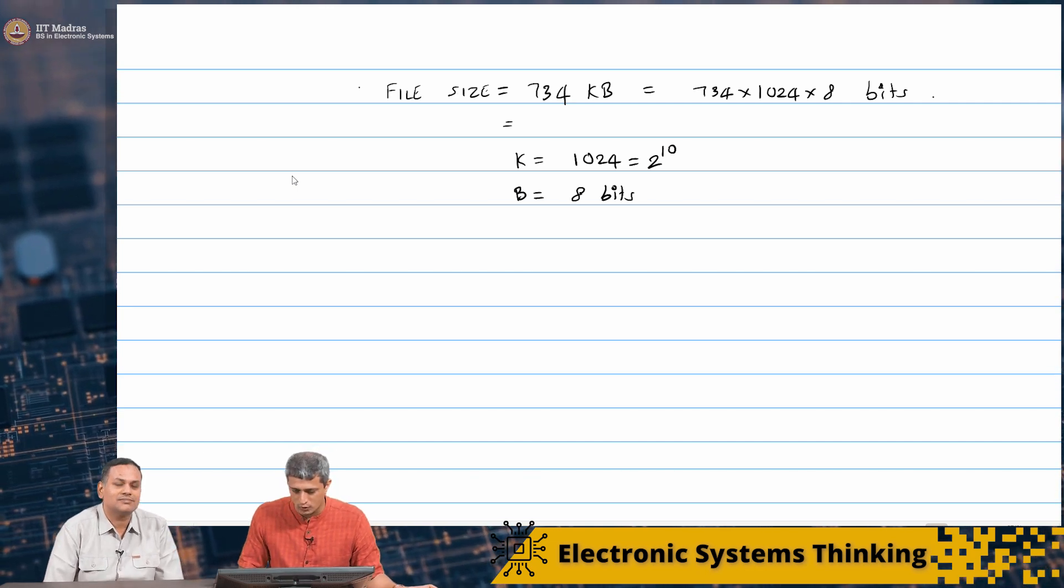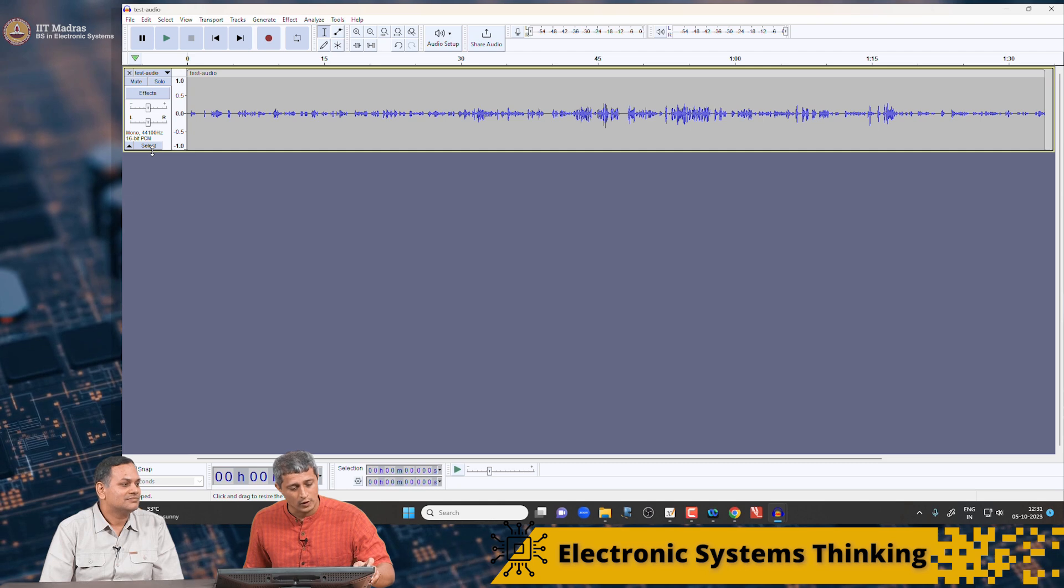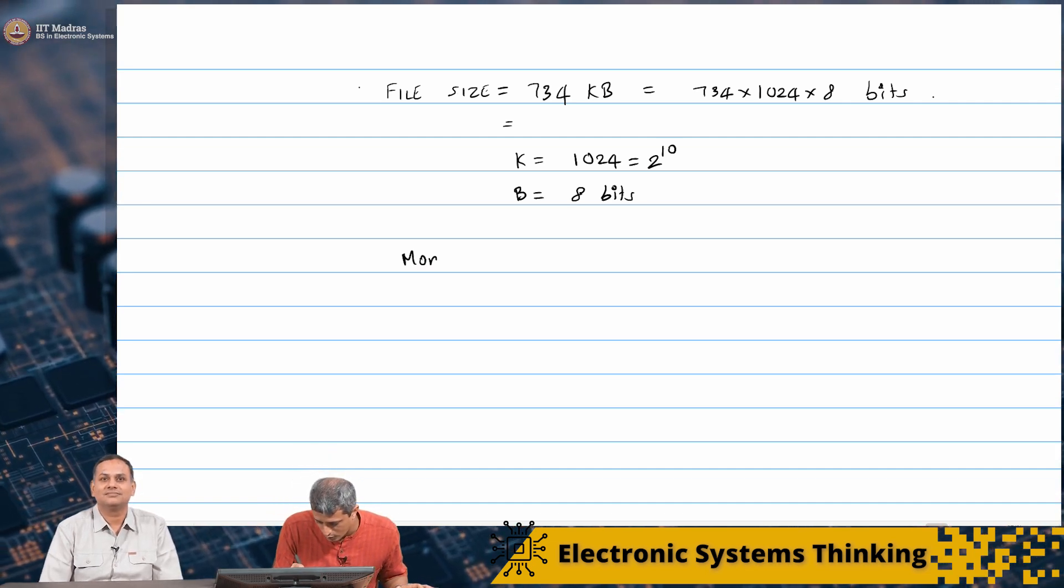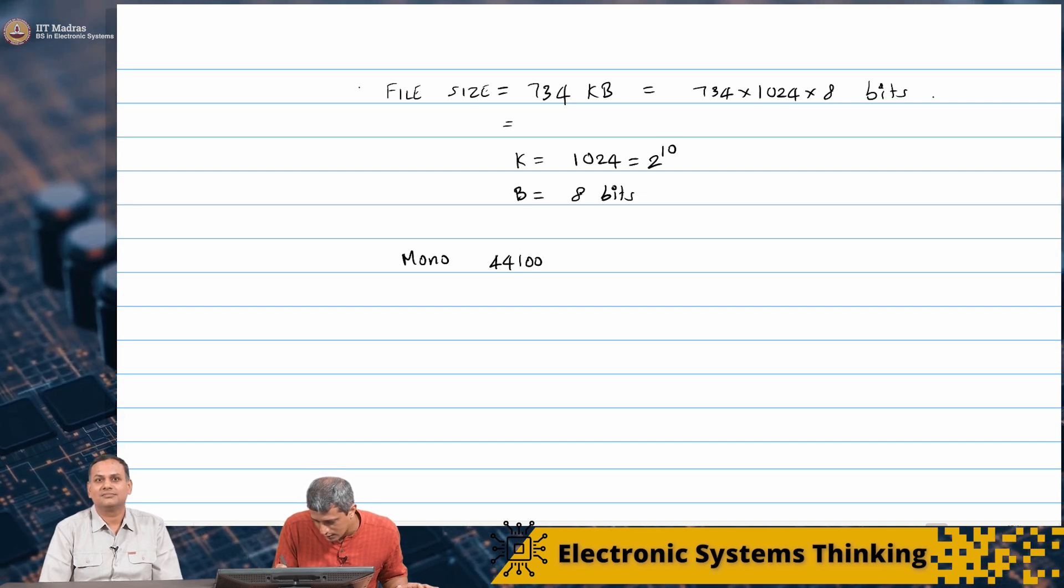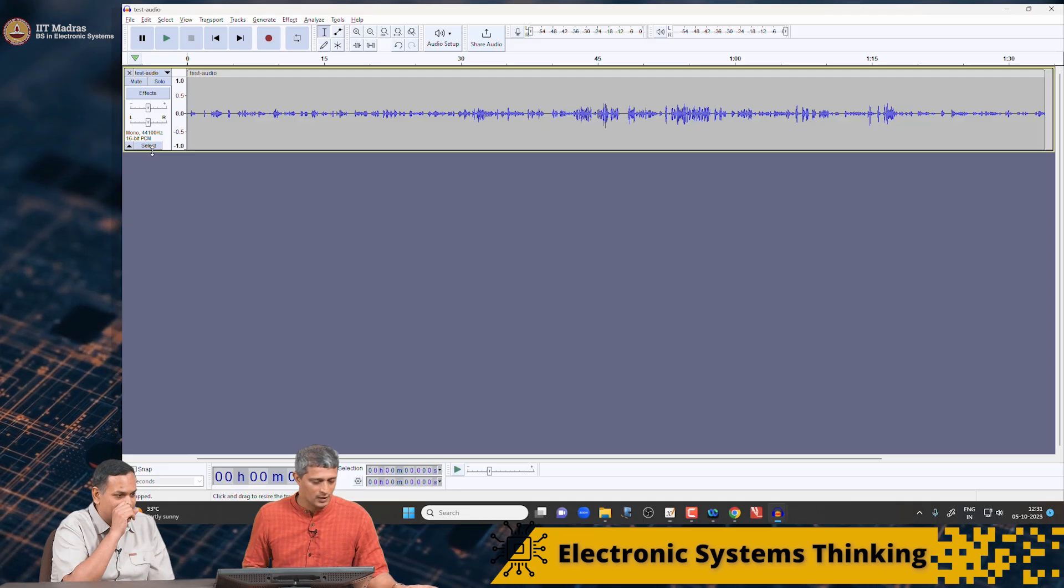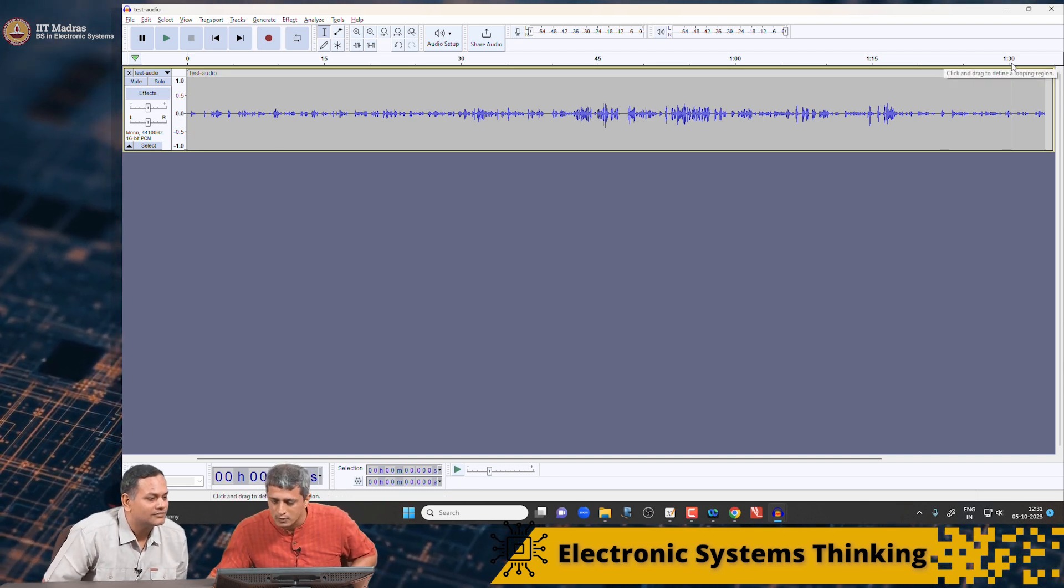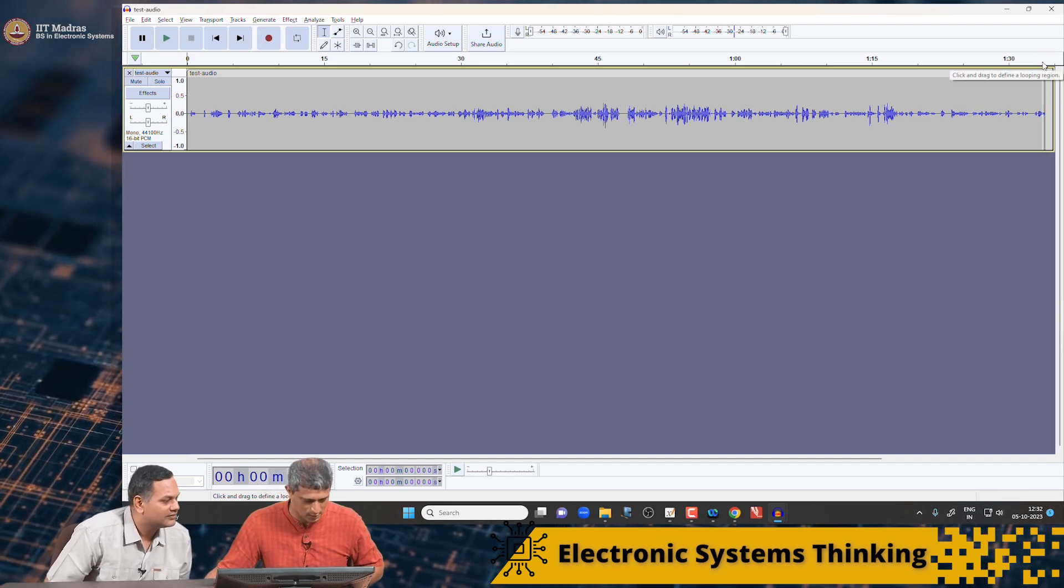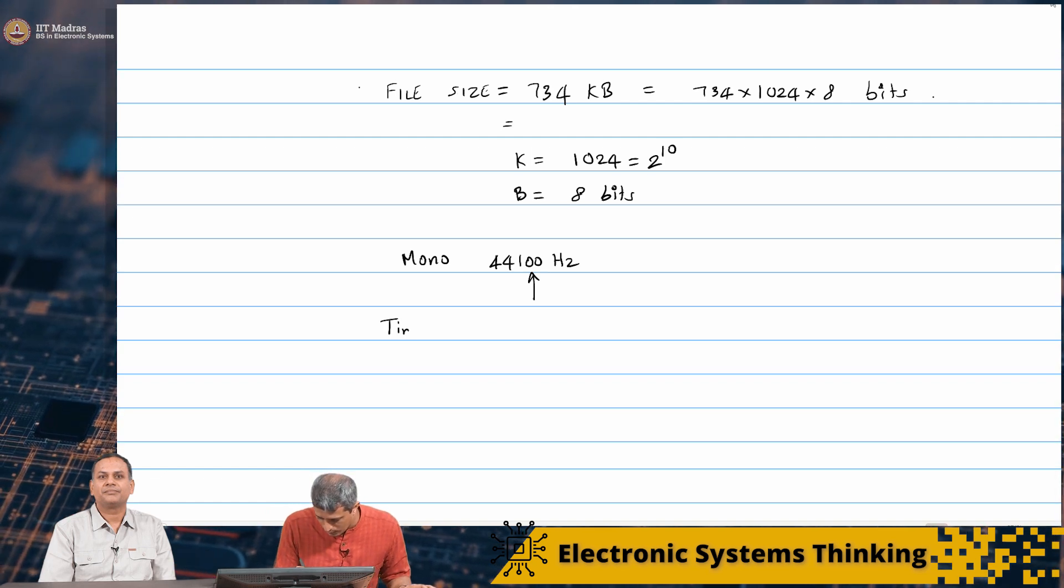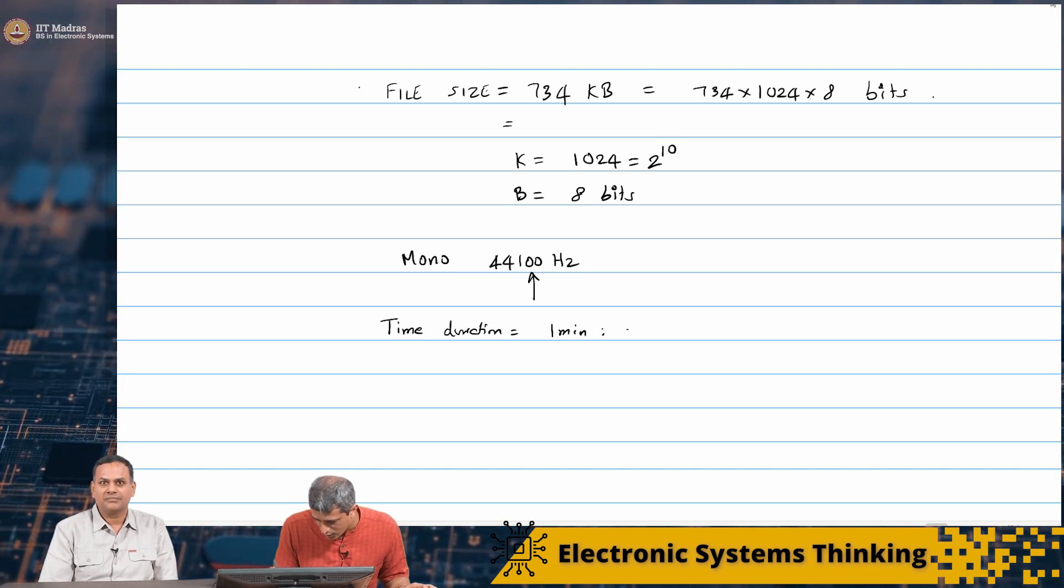This is 1024 B, again is 8 bytes, 8 bits. So if you look at the file size it is in kilo bytes. It is 734 times 1024 times 8 bits. So it has so many bits of information. Now we have to also check out one more important thing. It says mono 44100 hertz, mono 44100 hertz. This tells us the time sampling, the TS. And how much, what is the duration of this guy? It is something of the order of 1 minute 34 seconds.